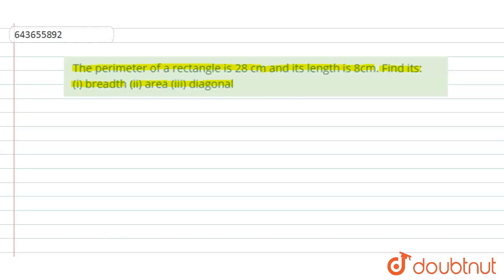First, let us draw a rectangle diagram. This is the rectangle with length given as 8 centimeters. Let's name this rectangle ABCD. The length is 8 centimeters, and we'll take the breadth as B.